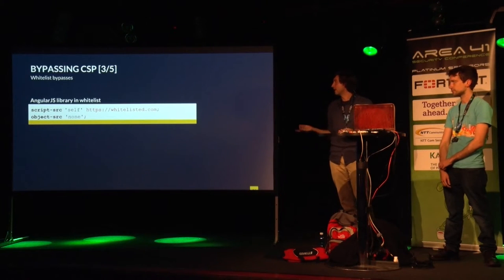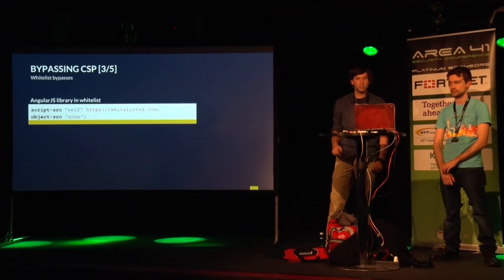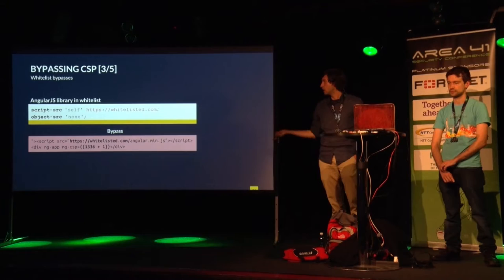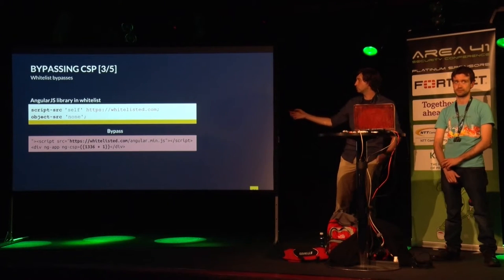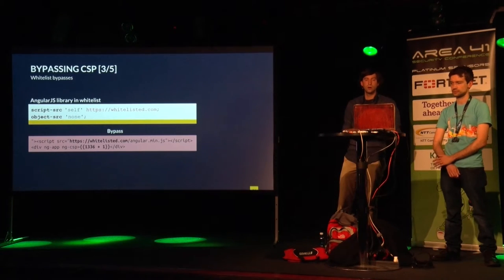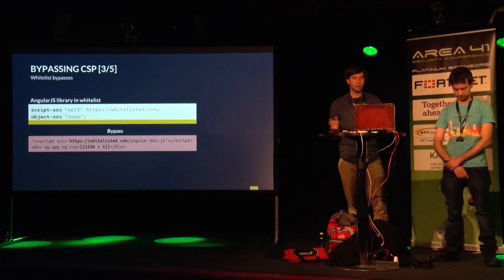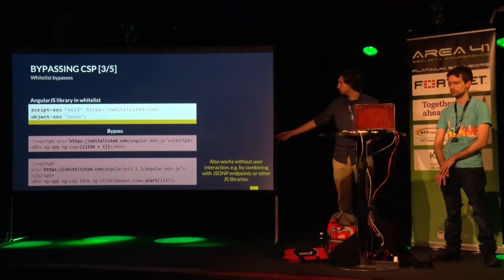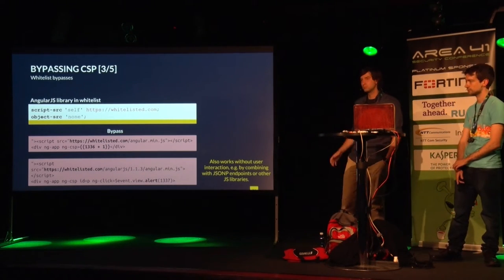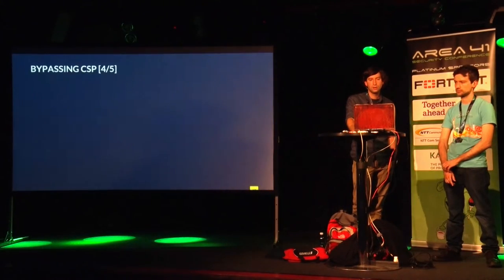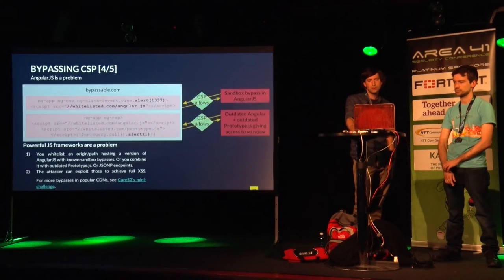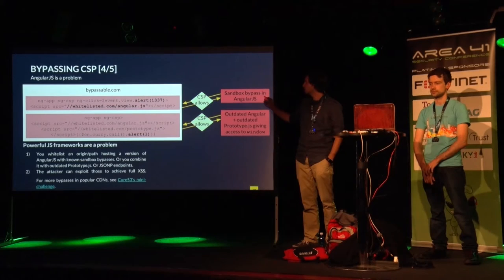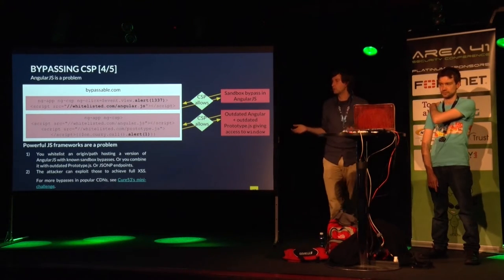Another nice bypass is Angular libraries. If whitelisted.com is hosting some Angular library, an attacker could just include that library - because it's whitelisted - and then execute it and use the very powerful template expression features of Angular. You can already do some interesting stuff with that in scope, and you could also use an Angular sandbox escape, like dollar-event.view.alert, and have full JavaScript execution again. What is basically happening: whitelisted.com is still whitelisted, so it can load Angular, and then you just inject some Angular markup and it will execute.